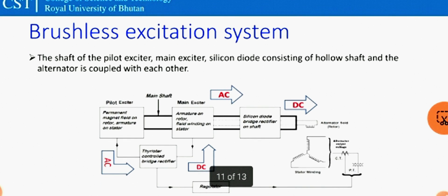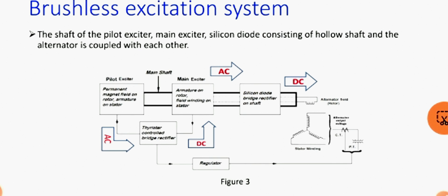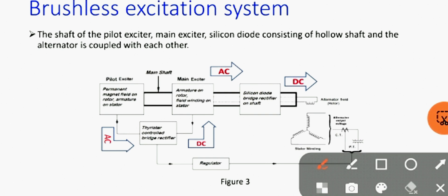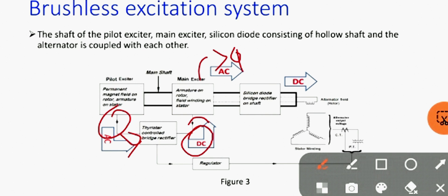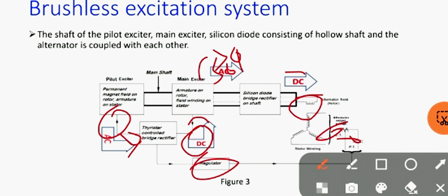Thirdly, the brushless excitation system. It consists of a pilot exciter, main exciter, silicon diode bridge rectifier, thyristor controlled bridge rectifier, regulator, CT, PT, and alternator. The pilot exciter is an AC generator which consists of a permanent magnet field on the rotor and armature on the stator. The output from the pilot exciter is given to the thyristor controlled bridge rectifier, from which we obtain a controlled DC field given to the main exciter consisting of armature on the rotor and field winding on the stator. From the main exciter, we obtain a 3-phase AC output which is given to the silicon diode bridge rectifier having a hollow shaft, and this rectifier converts the 3-phase AC output to DC output given to the field winding of the alternator. The CT, PT, and regulator are used to provide the firing angle.